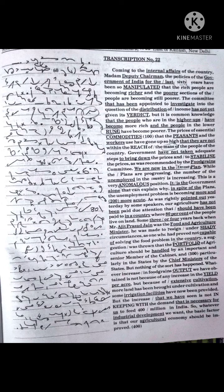So whatever industrial development we want, the basic factor is that our agricultural economy should be improved. For that all efforts should be made, more fertilizers should be used, and new methods of cultivation should be employed for growing more food crops and for growing other cash crops.